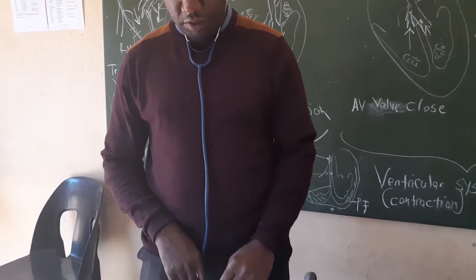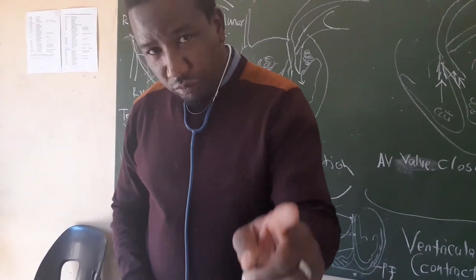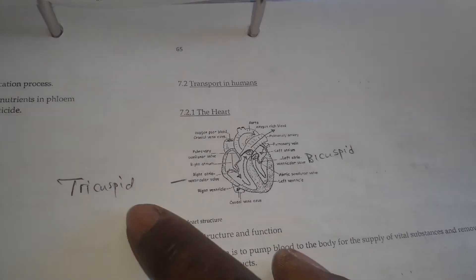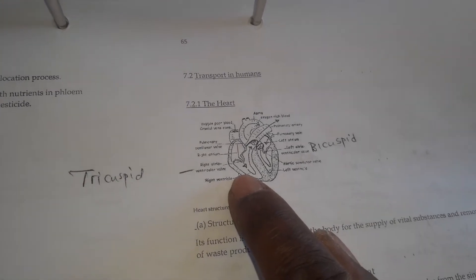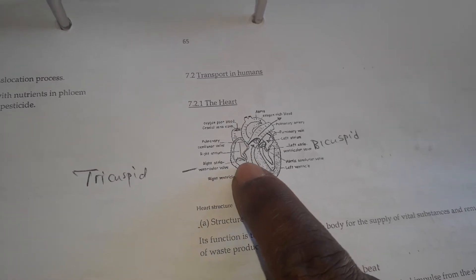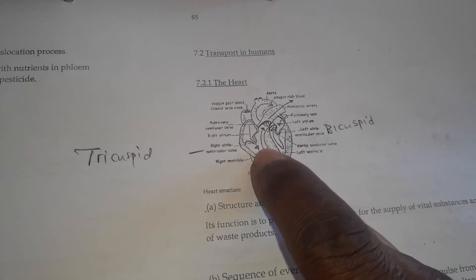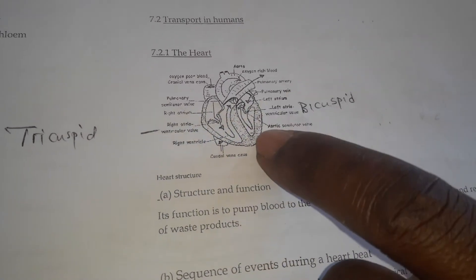We are going to talk about the heart for a while. When you look at your drawing, the structure of the heart is the way it is there. Now, there are some names I want you to know. There is this name, Tricuspid, which is not in your notes. The Tricuspid valve is on the right side of the heart, between the atrium and the ventricle. The Bicuspid valve is on the left side, between the atrium and the ventricle.